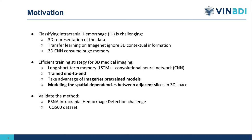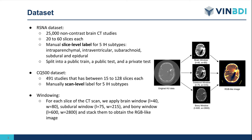We validate the method on the recent RSNA intracranial hemorrhage detection challenge and on the CQ500 dataset. The RSNA dataset consists of over 25,000 non-contrast brain CT studies with 20 to 60 slices each, manually labeled at the slice level for 5 intracranial hemorrhage subtypes, split into public train, public test, and private test. The CQ500 dataset consists of nearly 530 scans with between 15 to 128 slices each, manually labeled at the scan level for the same 5 subtypes.